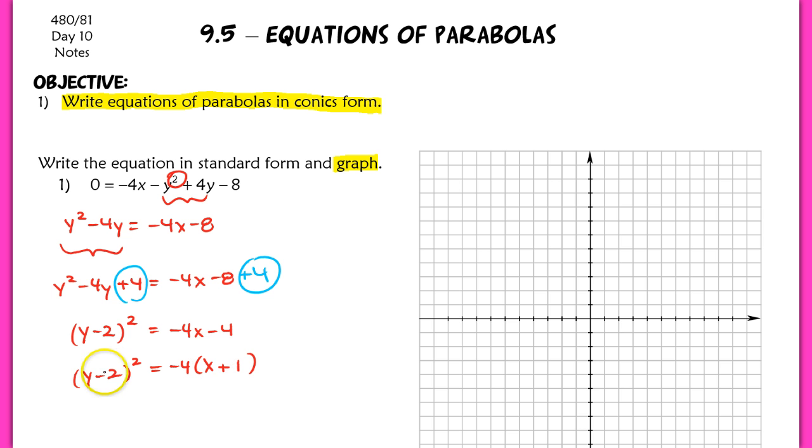And then to graph this, of course, we know that this is going to open to the left, because this value here in front of that linear term is negative. And the p value here, since 4p is equal to negative 4, the p value here is just negative 1. So I would like you guys to go ahead and graph this all on your own, and you can check the key if you want. And then we'll move on now to our second part of the lesson.